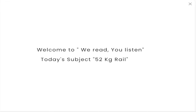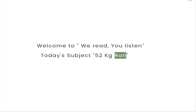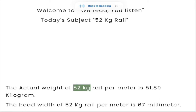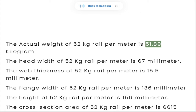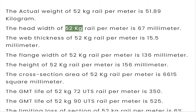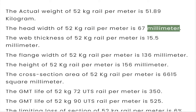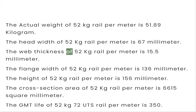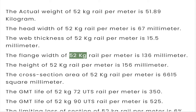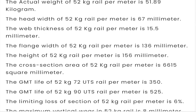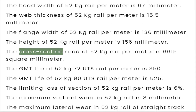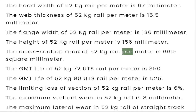Welcome to We Read, You Listen. Today's subject: 52 kg rail. The actual weight of 52 kg rail per meter is 51.89 kg. The head width is 67 mm, web thickness is 15.5 mm, flange width is 136 mm, height is 156 mm, and the cross-section area is 6615 mm².